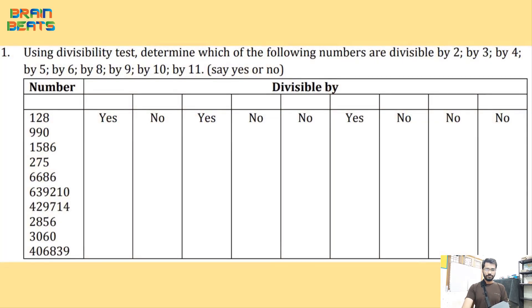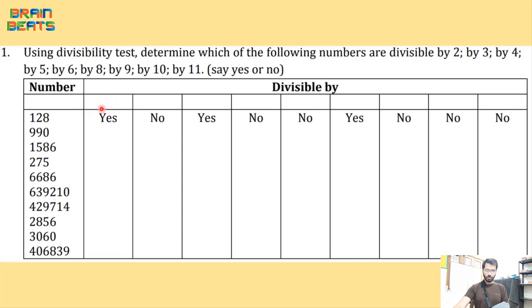We are starting Exercise 3.3. The first question says: using the divisibility test, determine which of the following numbers are divisible by 2, 3, 4, 5, 6, 8, 10, and 11. The first number is already given. You have to check whether it is divisible by 2 or not. If divisible, write 'yes'; if not, write 'no.' This number is divisible by 2, so we write 'yes.'